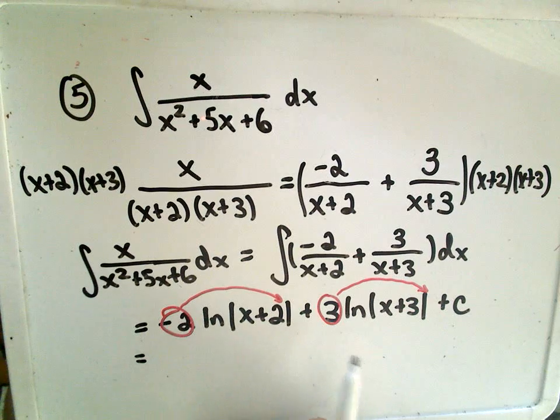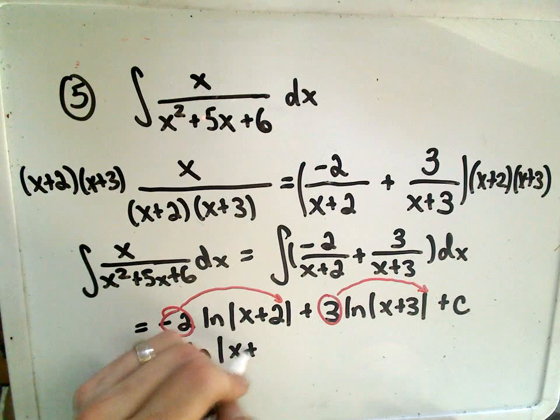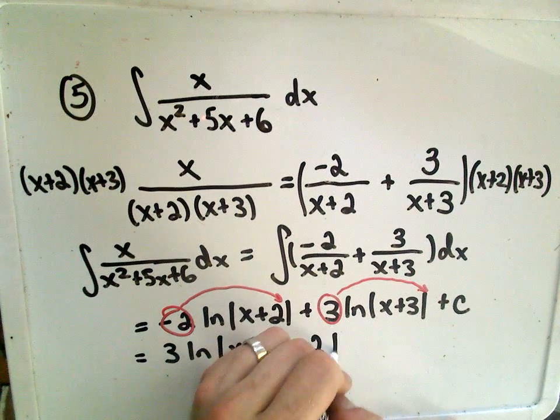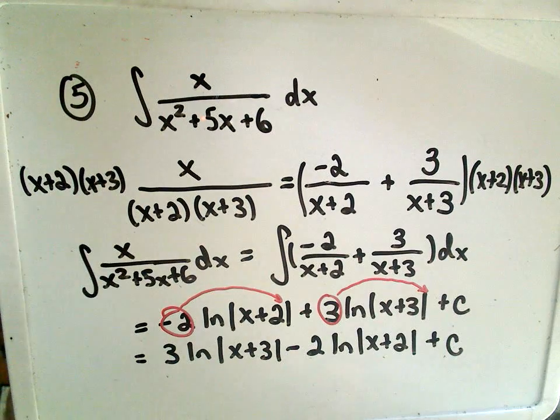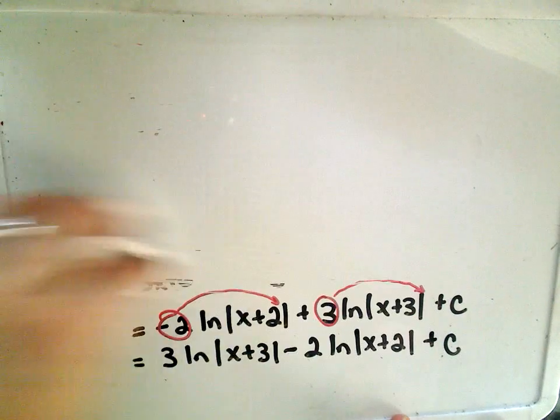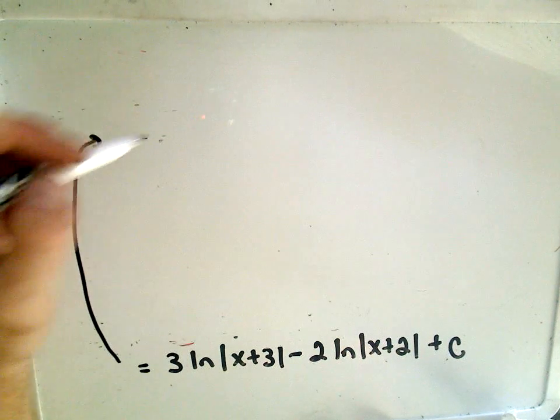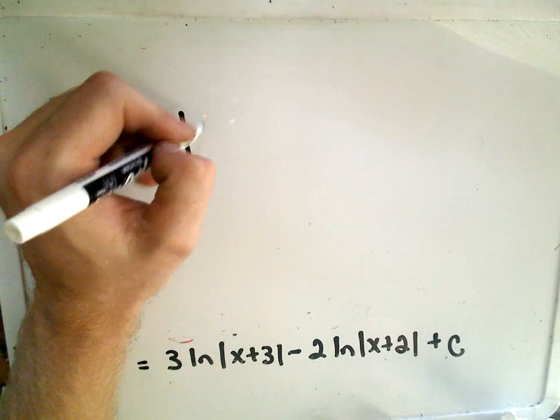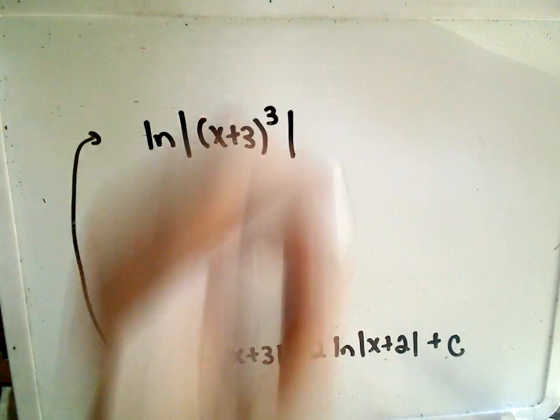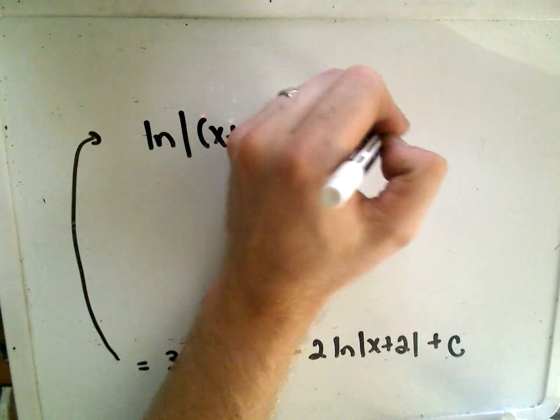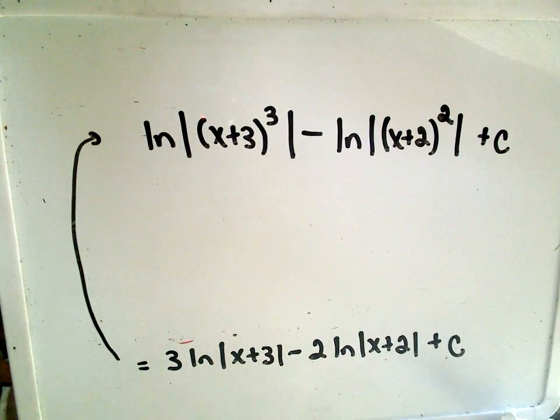I'm going to do a couple things first. I'm going to rewrite this as 3 times the natural logarithm of the absolute value of x plus 3, and then I'm going to write my minus 2 natural logarithm of x plus 2, just to basically rearrange it and make it look like one of their solutions. This is where I'm going to do the trick where the coefficients go up as exponents.